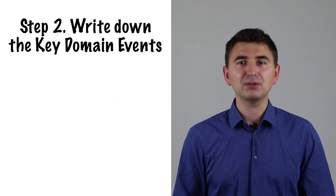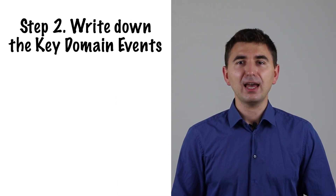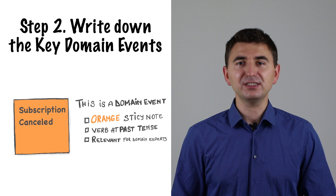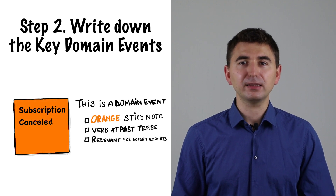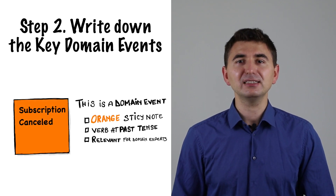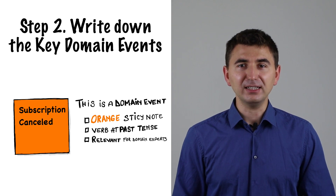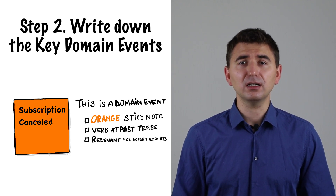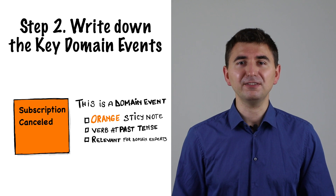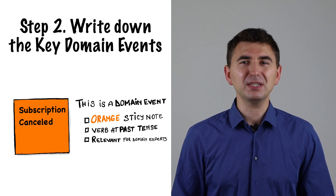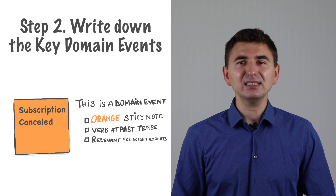Step 2: Ask the participants to write down the key events in their domain as an orange sticky note in a verb at past tense, and to place them along the timeline. This phase marks the start of the modeling of the whole business line with domain events. Most participants might be a bit confused at the start, but as the first event is added to the board, people start getting into a state of flow.